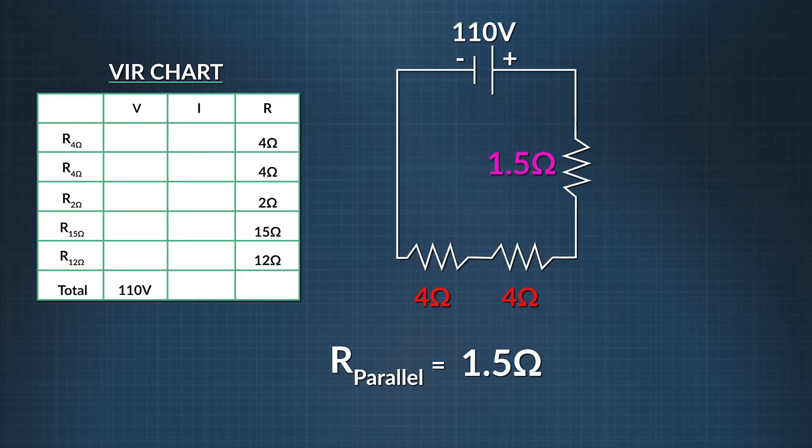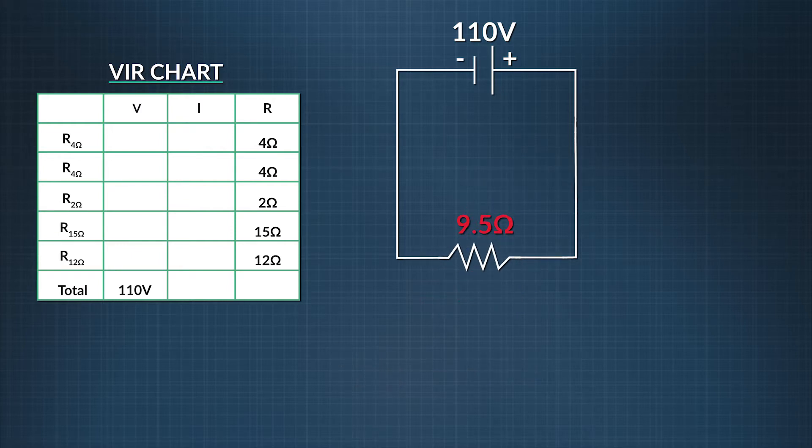Now all we need to do is add these three resistors together in series. That will give us our total equivalent resistance for this circuit. Since the resistors are in series, we add them using our series addition rule and find that the total resistance in this circuit is 9.5 ohms. Now here's our complex circuit simplified to a single equivalent resistance. Now that we know the equivalent resistance of the circuit, we can put that value into our VIR chart.